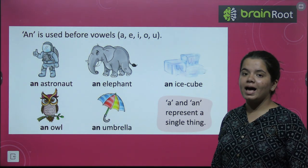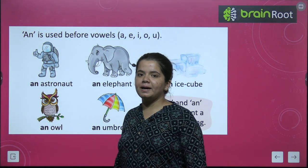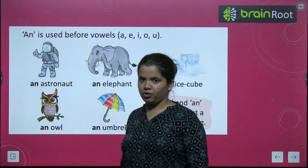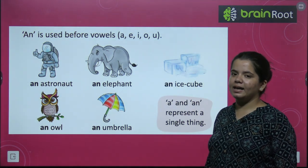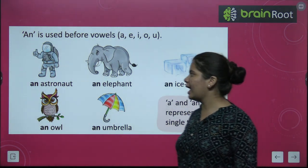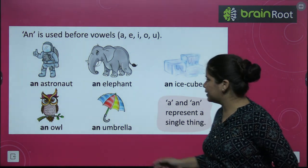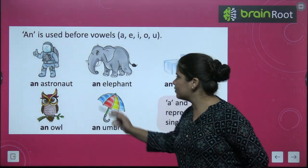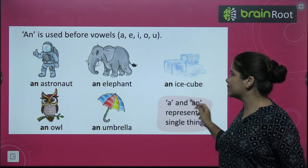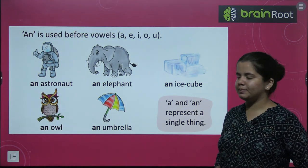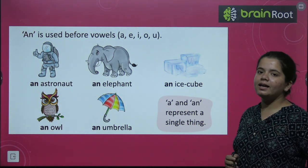First of all, we have an astronaut. You can see A is a vowel, so we use An. An elephant — in elephant, E is a vowel, so we have An. An ice cube — you can see I is a vowel.